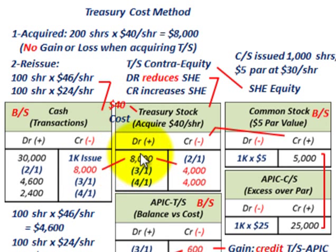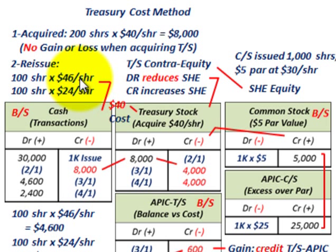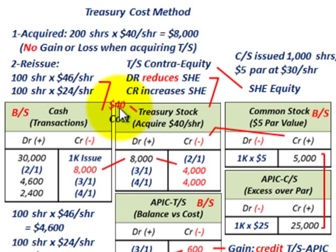No gain or loss when acquiring treasury stock, but when we reissue our treasury stock, that's where we're going to have some gains or losses. For example, we have 100 shares reissued at $46 per share. So we would debit our cash account for $4,600. This is where cost comes into effect — it cost us $40 per share to acquire this stock, so when we reissue it, we use that $40 cost in our treasury stock account.